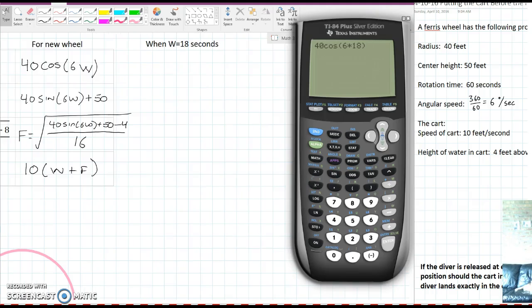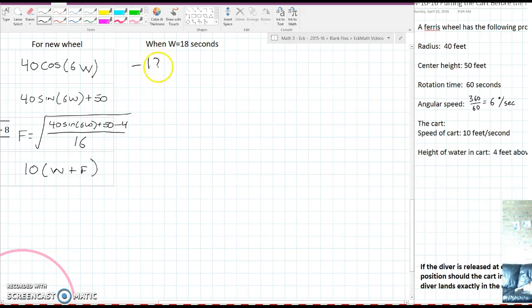I'm going to start evaluating all of these expressions when w equals 18. By giving us that 18 seconds in the problem, the problem writers have really given us a giant gift. Every one of these equations has a w inside. And every time you see a w you can put the number 18 in. So the first one is 40 cosine of 6w. So I'm going to do 40 cosine of 6 times 18. Evaluate that and we get negative 12.36 feet.